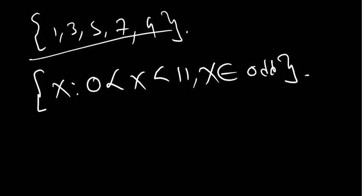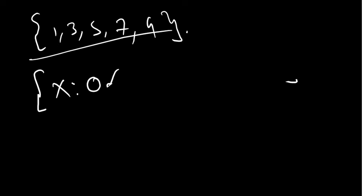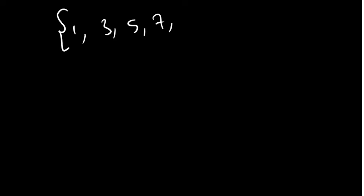It is very important to know what type of set you are dealing with — odd numbers, prime numbers, natural numbers, or whole numbers. Prime numbers are numbers which have exactly two factors: one and itself. For example, 1, 3, 5, 7, 11 are prime numbers. Nine is not prime because it has three factors: 1, 3, and 9.